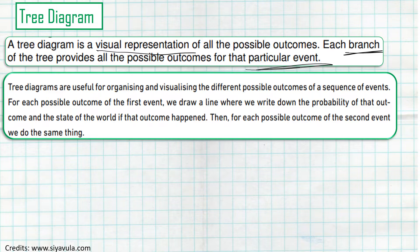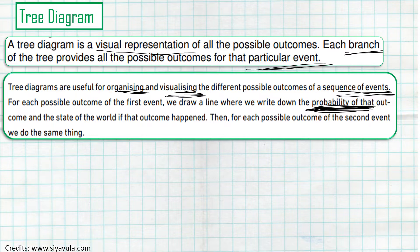Tree diagrams are very useful in organizing and visualizing the different possible outcomes of a sequence of events — one, two, three, or more events — giving a visual representation on a tree diagram. For each possible outcome of the first event, we draw a line that looks like a branch and write down the probability of that outcome. Then for each possible outcome of the second event, we do the same.